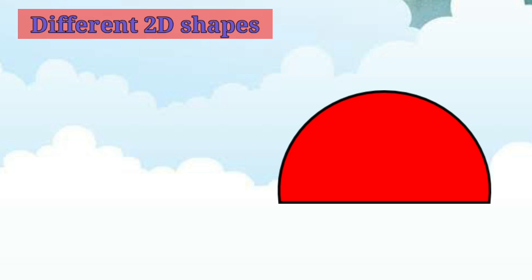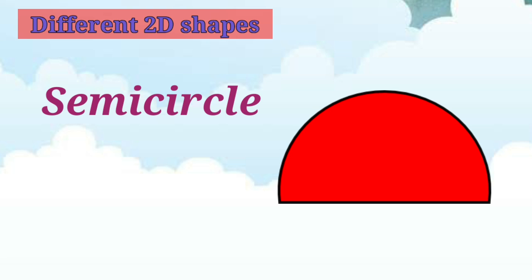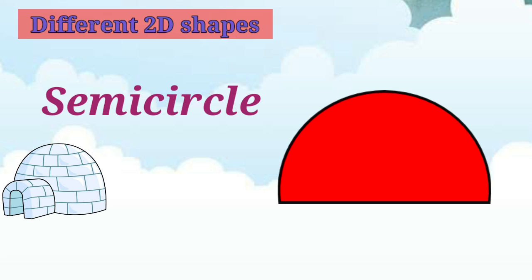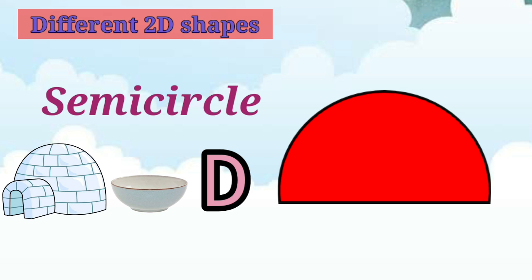Tell me, children, what shape is this? It is a half circle. A half circle is called a semicircle. Igloo, soup bowl, and the letter D are examples of a semicircle.